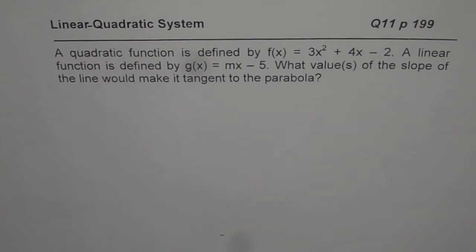The question here is: a quadratic function is defined by f(x) equals 3x squared plus 4x minus 2. A linear function is defined by g(x) equals mx minus 5. What values of the slope of the line would make it tangent to the parabola?